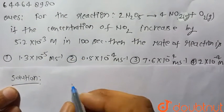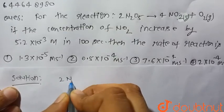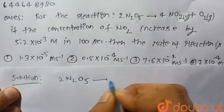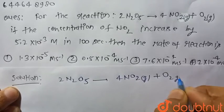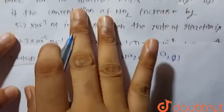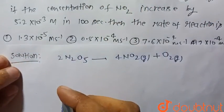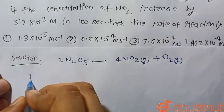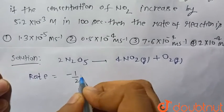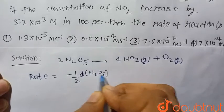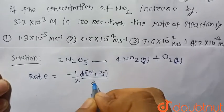Consider the given reaction: 2 N2O5 → 4 NO2 gas plus O2 gas. Its rate expression will be as follows: Rate = -1/2 d[N2O5]/dt.